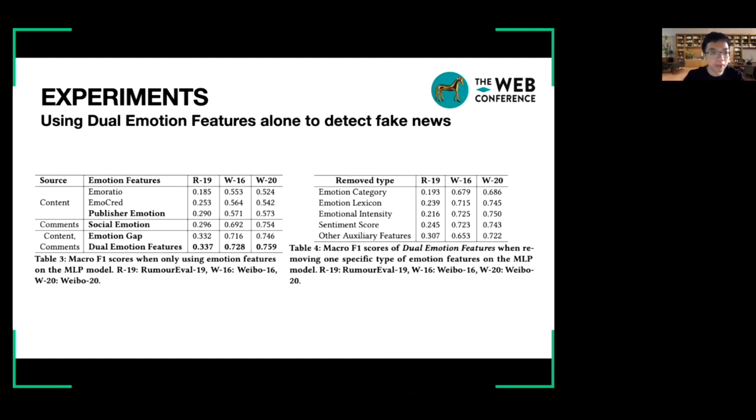To explore whether dual emotion features are more effective than baseline features, we firstly use emotion features alone to detect fake news. We adopt a simple five-layer MLP and feed only emotion features into it. In Table 3, among the three emotion features that source from content, publisher emotion is more effective.